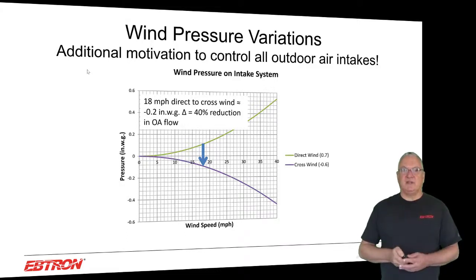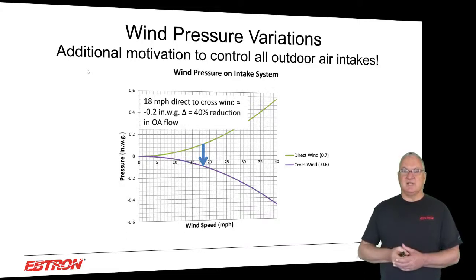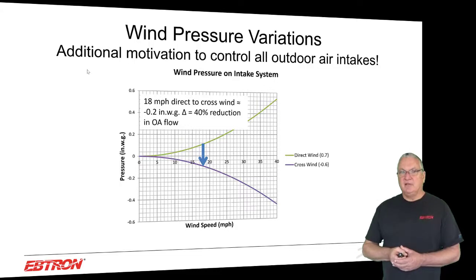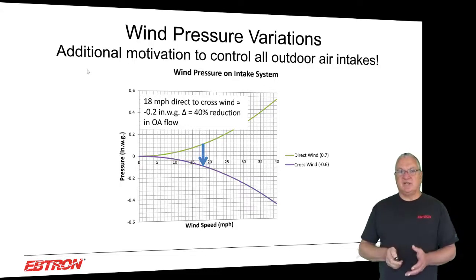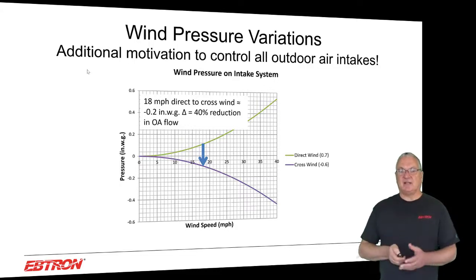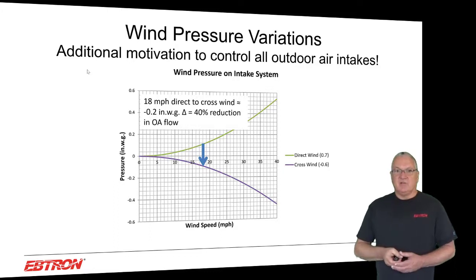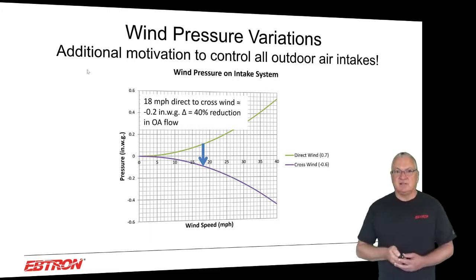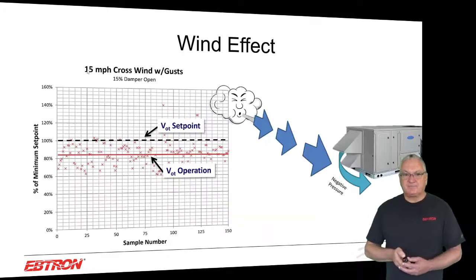In this example, if you operated the system with an 18 mile-per-hour direct wind, then checked the outside airflow when there was an 18 mile-per-hour crosswind — even if the fan speed was constant — you would see this two-tenths of an inch change and the same 40% reduction in outdoor airflow rate. This has nothing to do with fan speed changes. We've been trying to get people to understand this for a long time: it's not just fan speed changes you have to deal with. You have to consider the external environment as well.